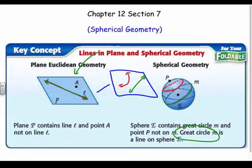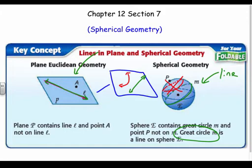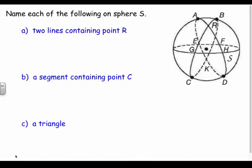That's the difference. The green one is actually a line in spherical geometry, where the red one is not. Nothing goes through the sphere — it's all on the surface of the sphere when we talk about spherical geometry.